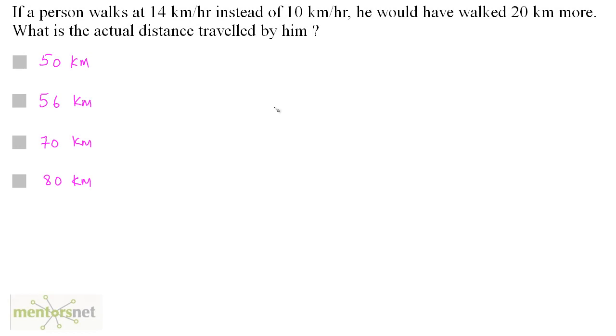If a person walks at 14 kilometers per hour instead of 10 kilometers per hour, he would have walked 20 kilometers more. What is the actual distance traveled by him?